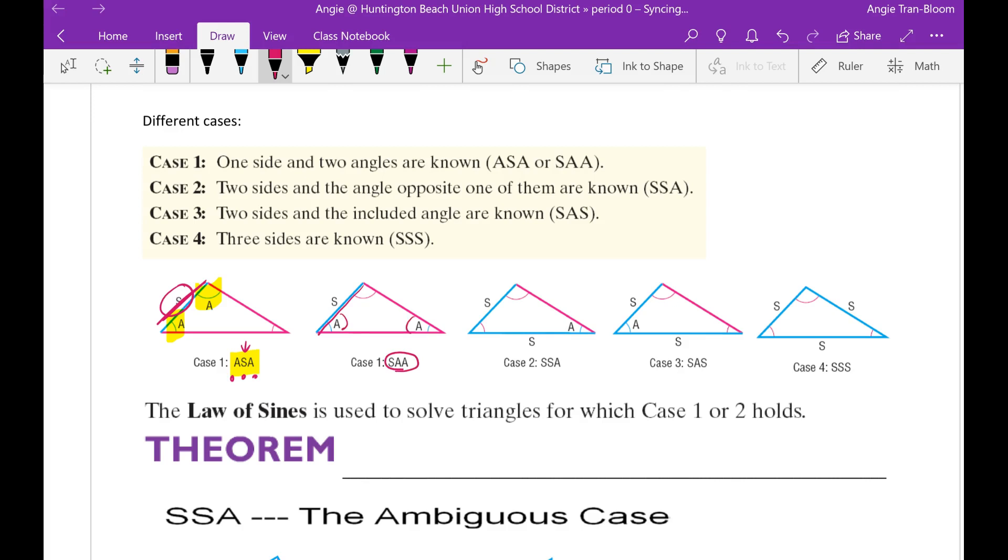Case number two, you can use the Law of Sines if you know two sides and then an angle. Case number three, you can use the Law of Sines if you know a side, an angle, and a side. And the last case, when you know all sides.